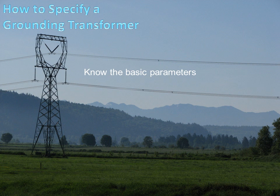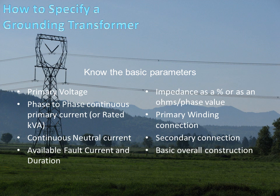So how do we specify a grounding transformer? First, you need to know the basic parameters: primary voltage, phase-to-phase continuous primary current or rated KVA, continuous neutral current, the available fault current and its duration, impedance specified as either a percentage or ohms per phase, primary winding connection — zigzag or Y — secondary connection if required, and basic overall construction.